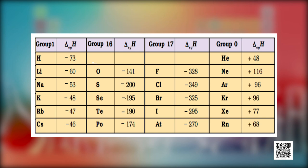However, there are a few exceptions — the electron gain enthalpy of oxygen and fluorine is less negative than that of the succeeding element. This is because when an electron is added to oxygen or fluorine, the added electron goes to the smaller n=2 quantum level and suffers significant repulsion from the other electrons present in this level. For n=3 quantum level, as in sulfur or chlorine, the added electron occupies a larger region of space and the electron-electron repulsion is much less.